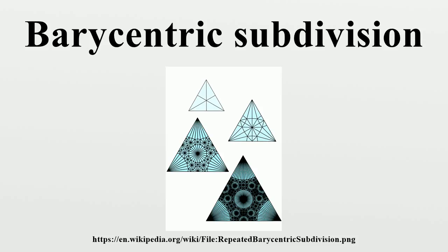A generalization of barycentric subdivision can also be defined for a cell complex. Informally, such an object can be thought of as an assemblage of one or more chunks of rubber, each shaped like a convex polytope, which are glued to each other by their facets, possibly with much stretching and twisting. The topological version of BCS replaces each cell by an assemblage of rubber simplices, likewise glued together by their facets and possibly deformed. The procedure is to select for each cell a deformation map that converts it into a geometric convex polytope, preserving its incidence and topological connections, then perform the geometric BCS on this polytope and map the resulting subdivision back to the original cells.